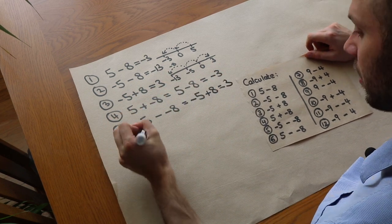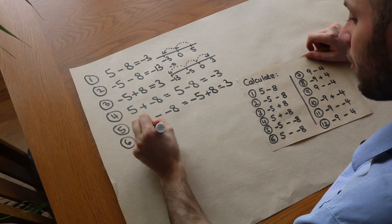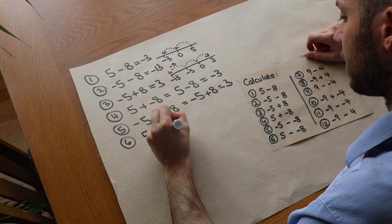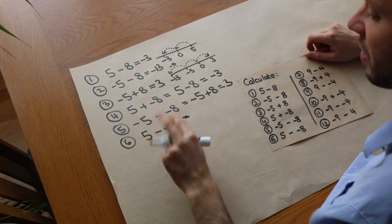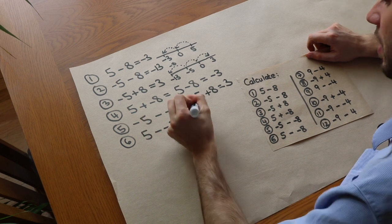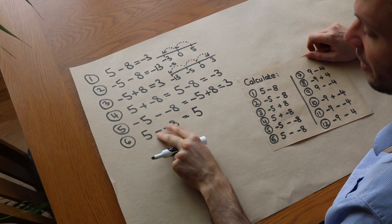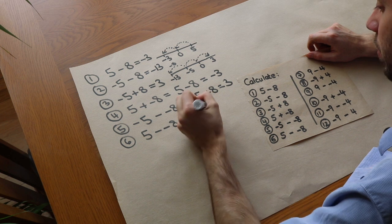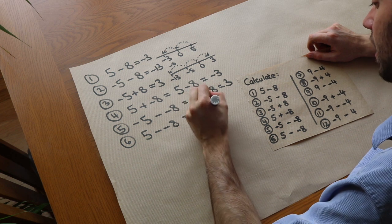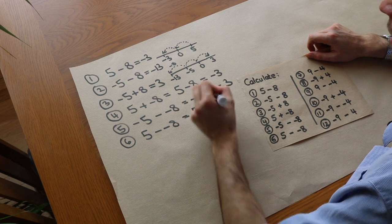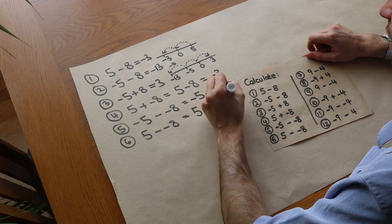What about five minus negative eight? When we subtract a negative we're instead adding. We can replace the two minuses next to each other with plus, and five plus eight is obviously thirteen.